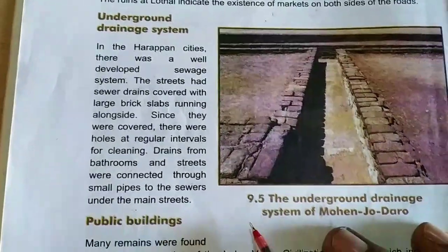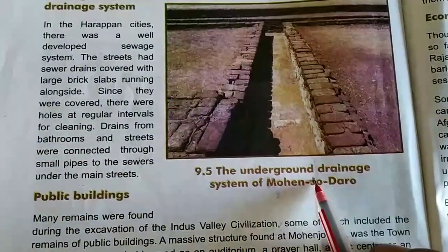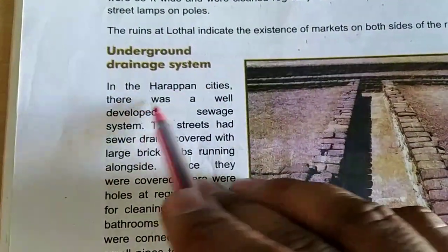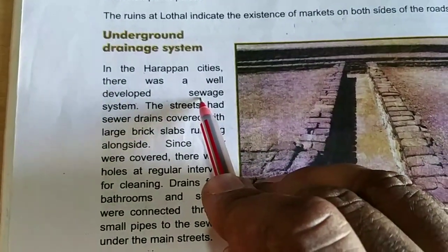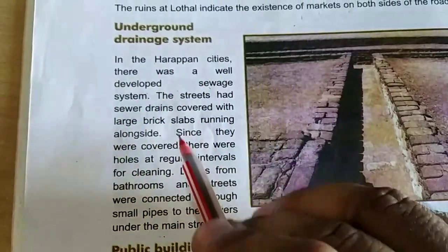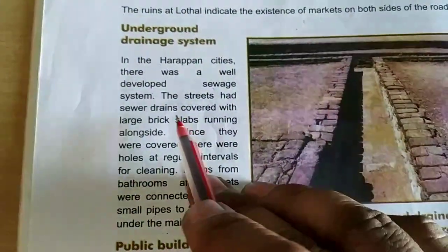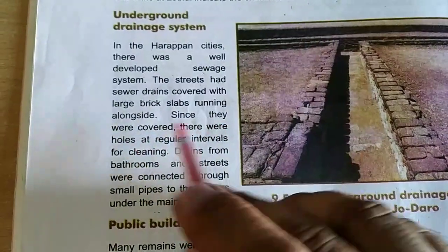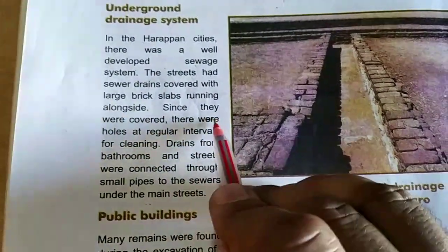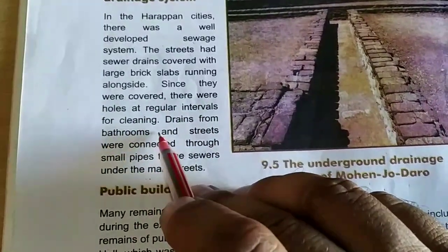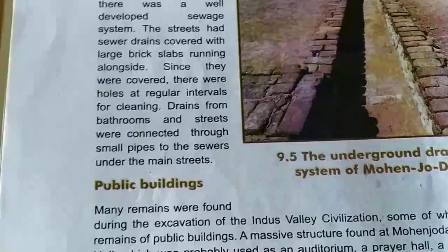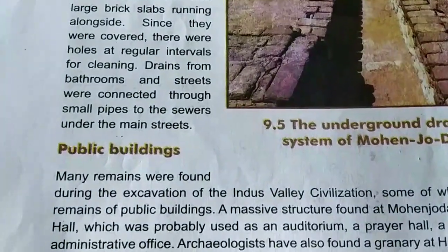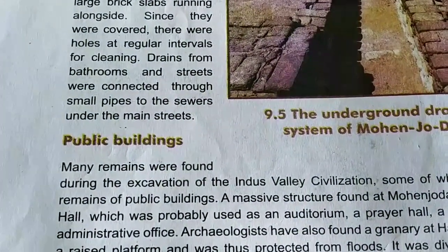Underground Drainage System. Here is the underground drainage system of Mohenjo-Daro. In the Harappan cities, there was a well-developed sewage system. The streets had sewer drains covered with large brick slabs running alongside. Since they were covered, there were holes at regular intervals for cleaning. Drains from bathrooms and streets were connected through small pipes to the sewers under the main streets.